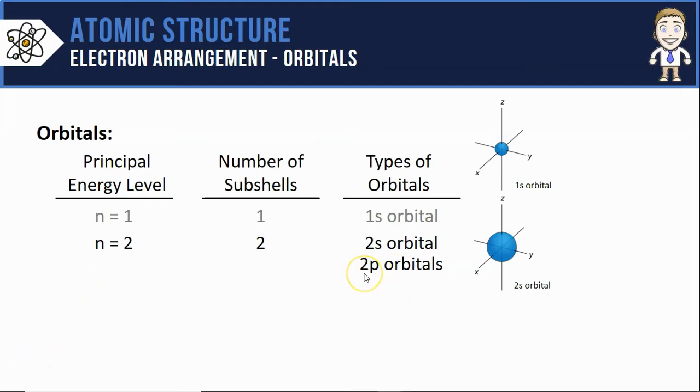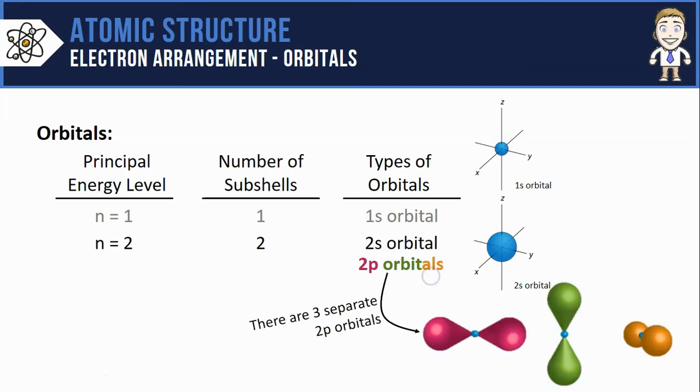Next we've got the 2p. Let's take a look at this orbital type. You might have noticed it's been pluralized because there's not just one single 2p orbital. There's actually three separate 2p orbitals. Here's a visualization of all three. The blue dot at the center would be the nucleus and these colored regions of space represent where the electrons would be. You'll notice the shapes get pretty bizarre.